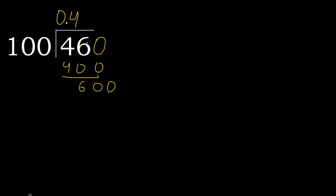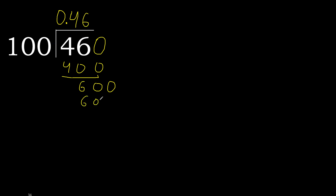The point is here. 0.600. 100 multiplied by 6 is 600. Okay, it's not greater. Subtract — zero, zero. Therefore finish. 46 divided by 100.